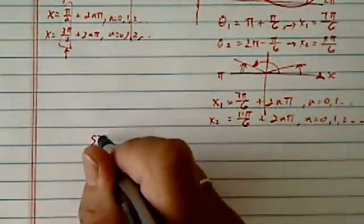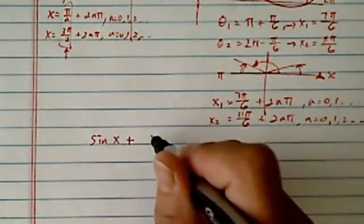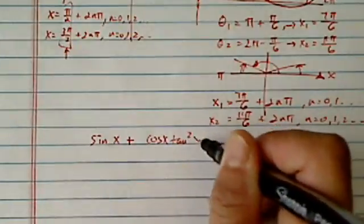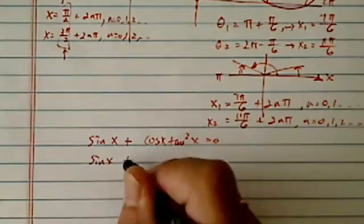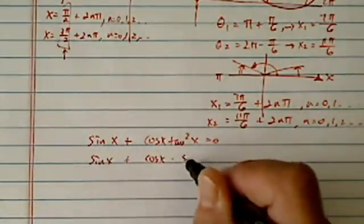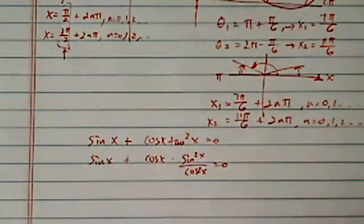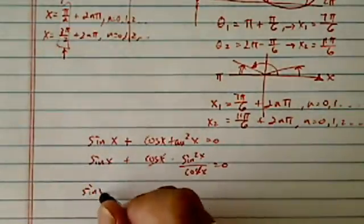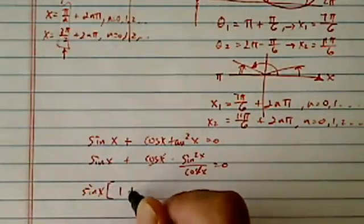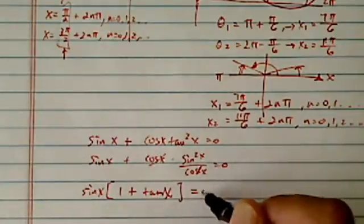Let's do one more. This is an interesting problem. We have given that sine x plus cosine x tangent square x equal to 0. We're asked to solve this one. Let's clean up a little bit, cosine x times sine square x and cosine square x. I use the definition for tangent, okay, and then cosine cancels out. If I pull the sine x out, I have 1 plus tangent of x equal to 0. It's really interesting.